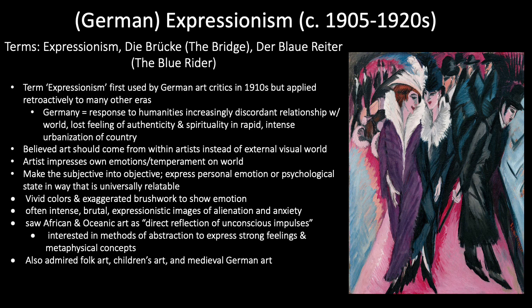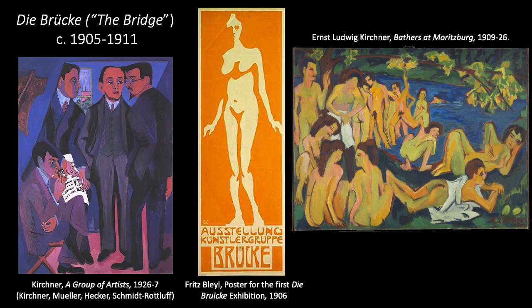Both Die Brücke and Der Blaue Reiter are particularly emblematic of German expressionism before and immediately after World War I. Around 1905, a group of Dresden-based artists joined together as Die Brücke, or The Bridge. Their name was taken from a passage by philosopher Friedrich Nietzsche: "What is great in man is that he is a bridge and not an end." This group saw the potential for contemporary humanity to serve as a bridge to a more perfect society in the future. They adopted traditionally northern European media like woodcuts and oil paints, using distorted forms and jarring colors to communicate emotional tension in intense, even brutal expressionistic images of alienation and anxiety.